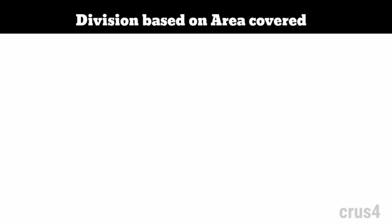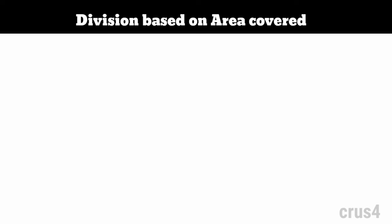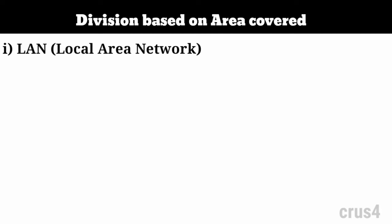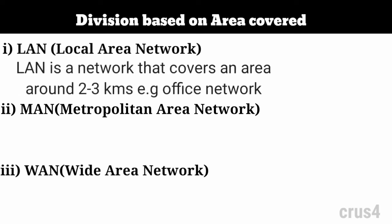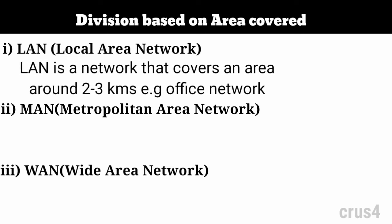Now let's discuss division based on area covered. This division has three basic types: Local Area Network (LAN), Metropolitan Area Network (MAN), and Wide Area Network (WAN). LAN is a network that covers an area of around 2 to 3 kilometers.